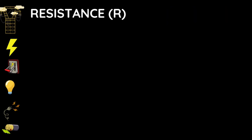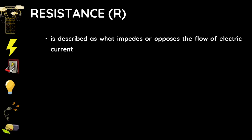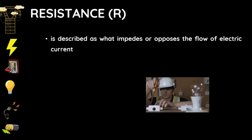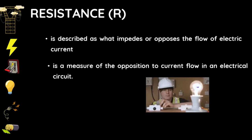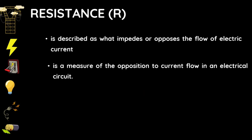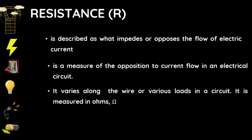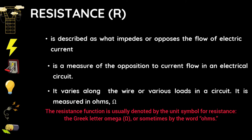Next is resistance. Resistance is described as what impedes or opposes the flow of electric current. It is a measure of the opposition to current flow in an electrical circuit. It varies along the wire or various loads in a circuit. It is measured in ohms using the omega symbol.